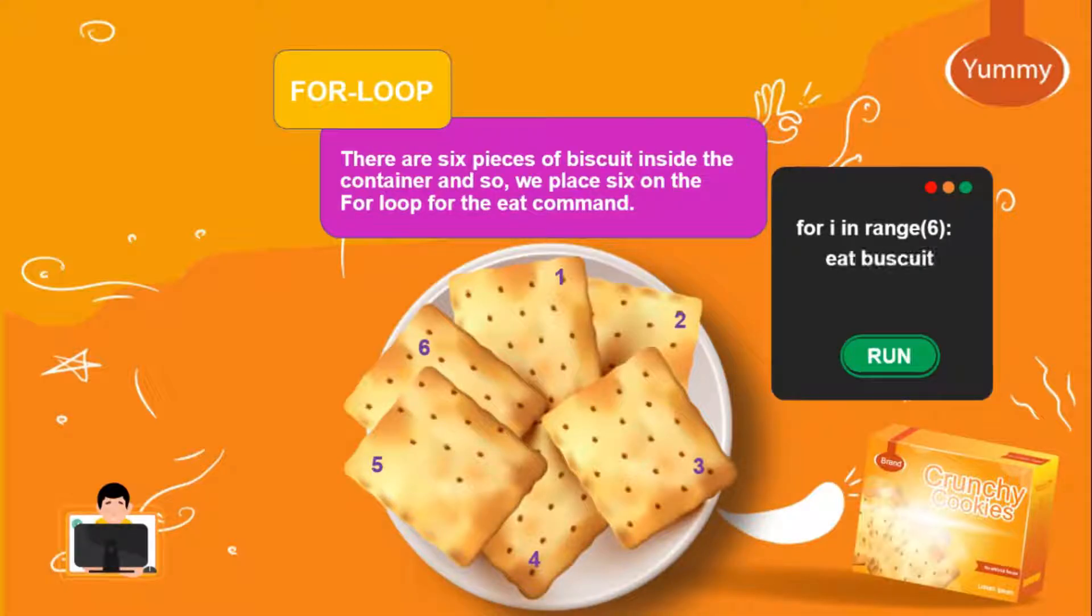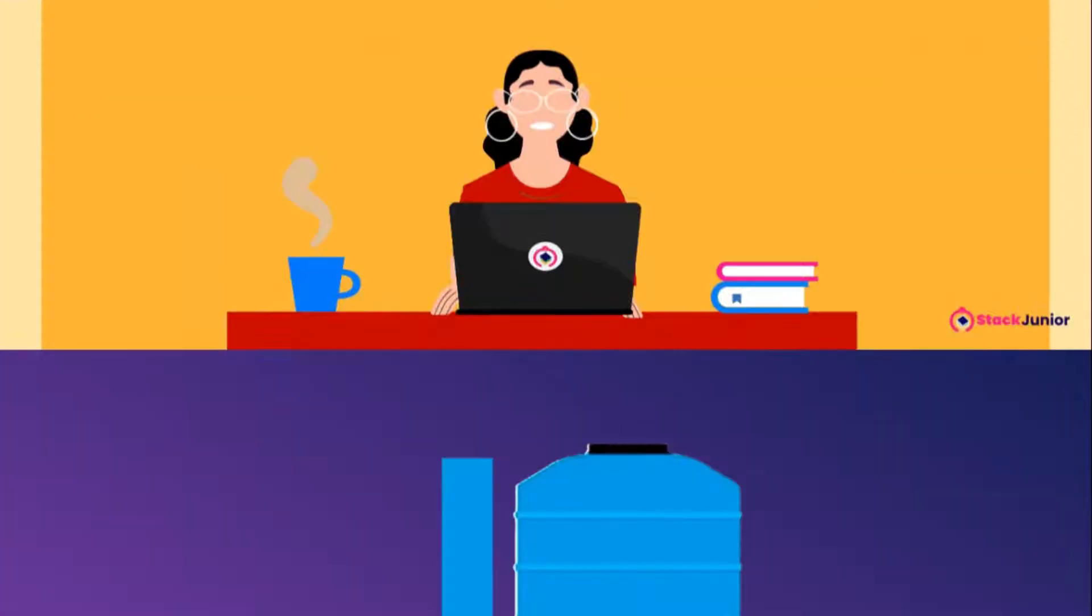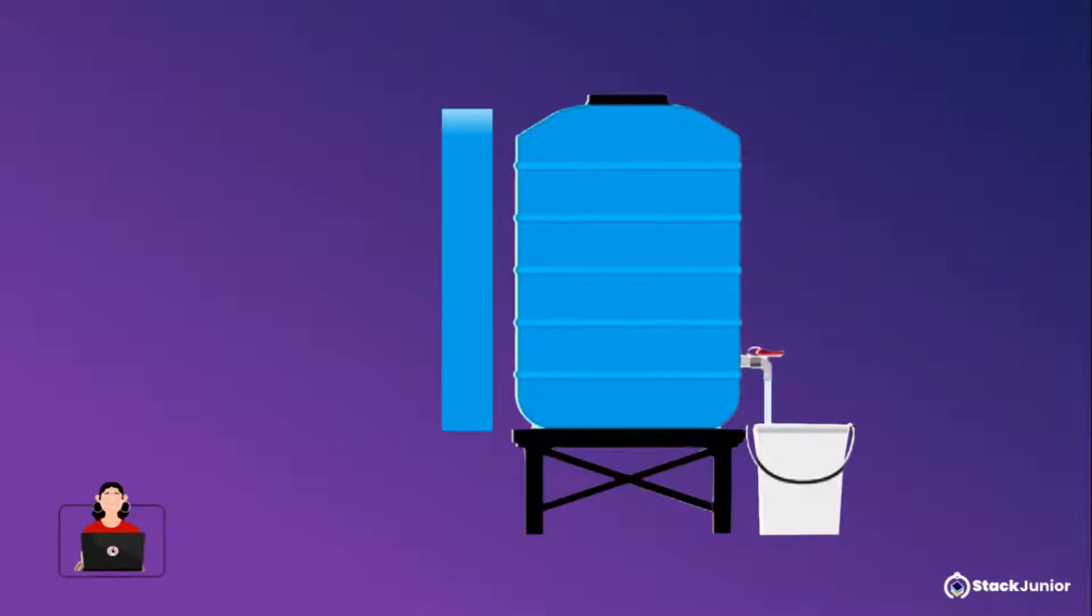This is because we already know that there are six pieces of biscuit inside the container, so we place six on the for loop for the command. Excellent! Also, we have a water tank filled with water. We don't have an idea of the number of buckets of water we could get from it.